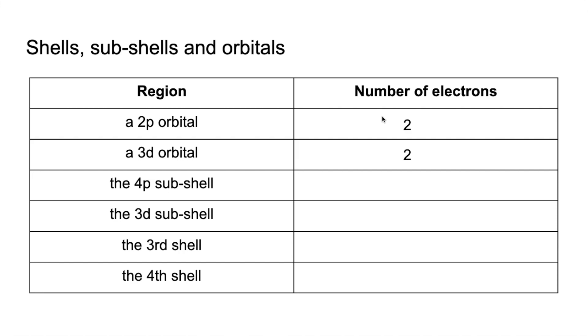The next two subshells now, so the 4p or any p subshell can hold six electrons maximum. Any d subshell can hold up to ten electrons.